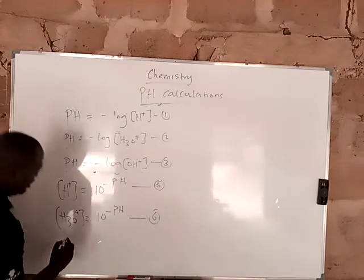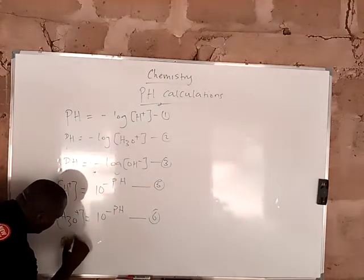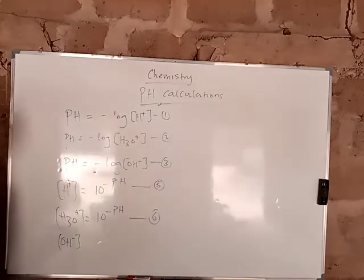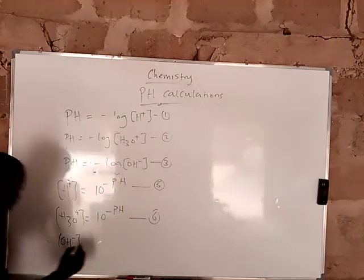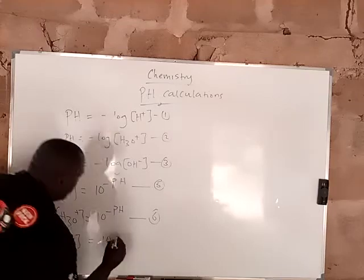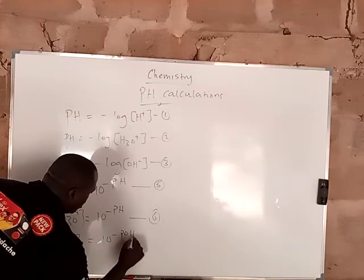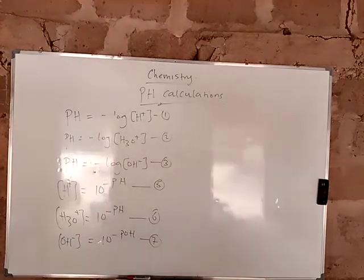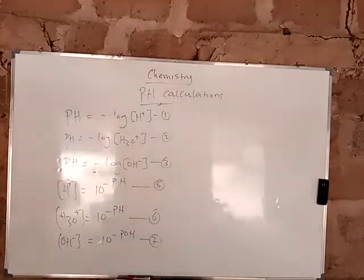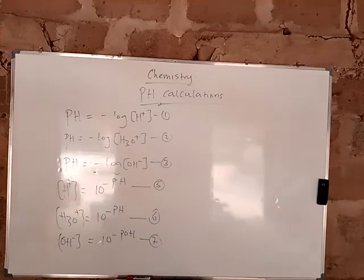The same thing applies here. The hydroxyl ion concentration is equal to 10 raised to the power of minus pOH. And this is equation 7. Now please, endeavor to start writing this on your jotter. It will be mind-blowing.